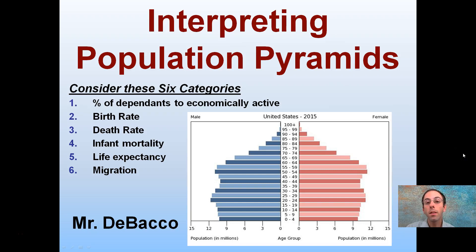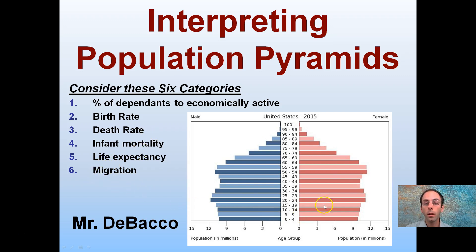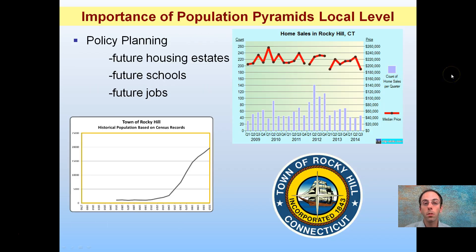I have another video going over the basics of population pyramids. This involves interpreting them considering these main six categories: percent of dependents that are economically active, birth rate, death rate, infant mortality, life expectancy, and migration. All these play into how a population pyramid can be used to help predict the future. Here we're going to interpret some of these, looking at the importance of population pyramids.